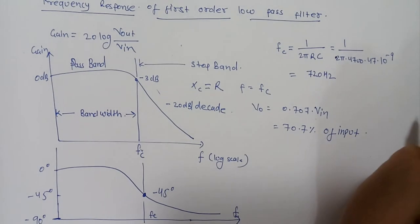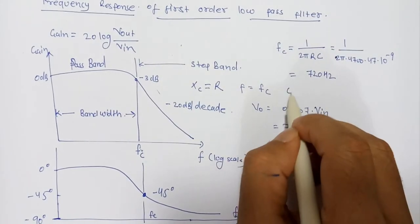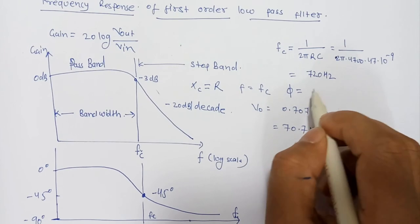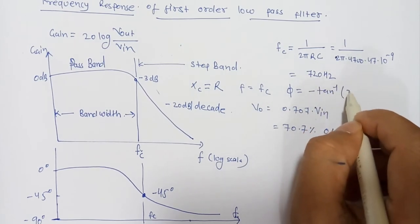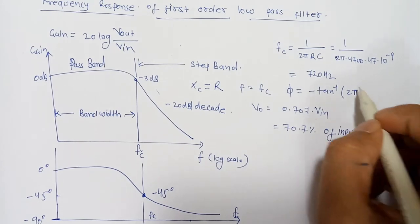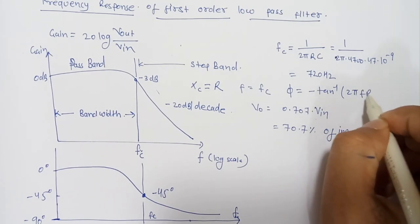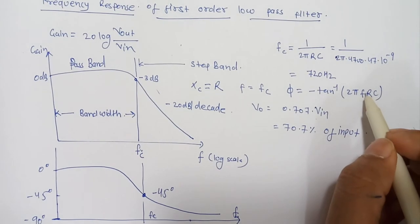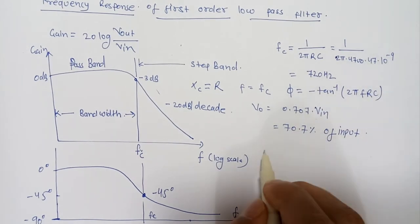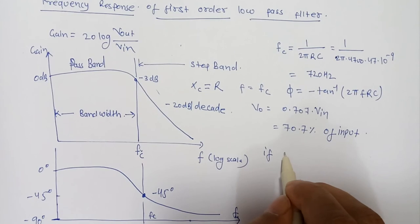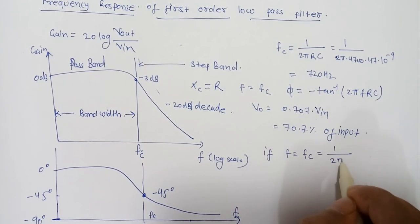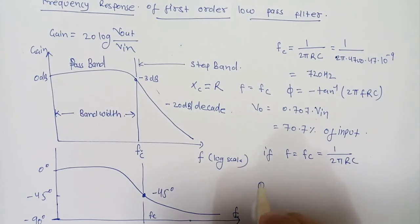The phase shift φ at Fc: how we can calculate? -tan⁻¹(2πf × RC). At F = Fc, if we calculate, F = Fc = 1/(2πRC). If we put the value of F into φ, it will become -tan⁻¹(2πF × RC) = -tan⁻¹(1/(2πRC) × RC).